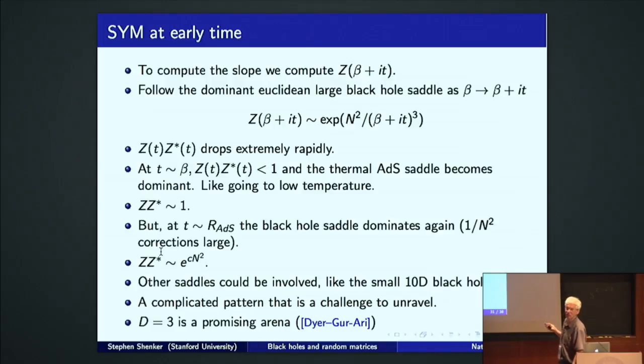Well, we should just compute the partition function of super Yang-Mills theory in this gravitational limit and then analytically continue in time. Well, the dominant saddle is the Euclidean black hole, just analytically continue its action as a function of time. This was Z over N squared over beta cubed at zero time, just took beta to beta plus IT. Well, ZZ star drops extremely rapidly. At times of order beta, this magnitude drops below one. It's kind of like the Hawking Page transition in time rather than temperature. And there's another saddle, the thermal ADS saddle, starts dominating. And as a function of real time, the thermal ADS saddle, roughly it's made of a finite number of oscillators. It just wiggles in time. But its magnitude is order one.